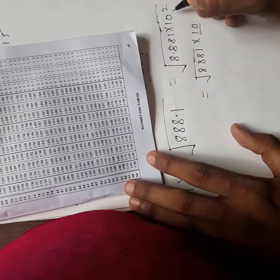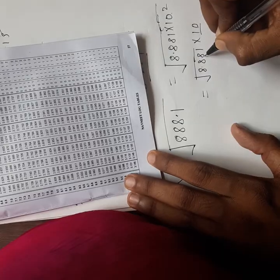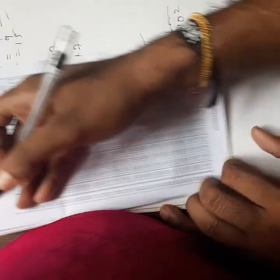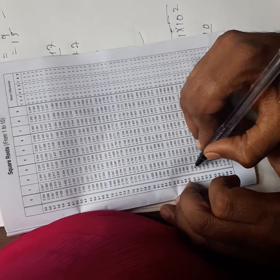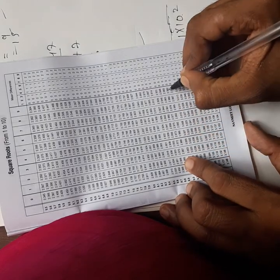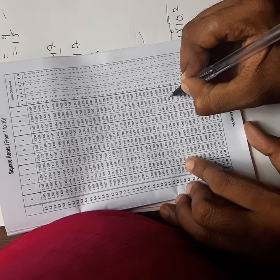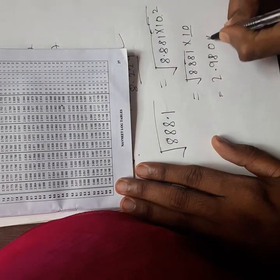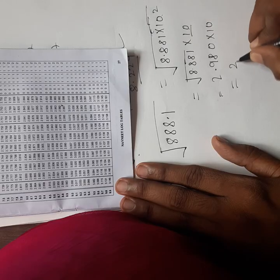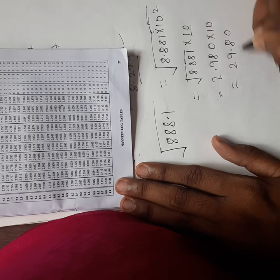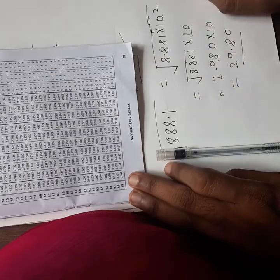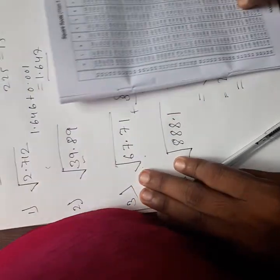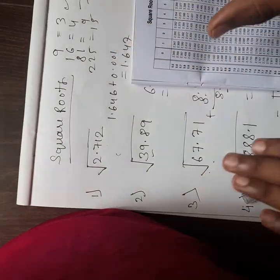I hope you're understanding what I did here. I took out square root of 100 as 10. For 8.881, I see here 8.88, row 88, column 8, and for 1 it's 0. So 2.980. I can directly write here 2.980 times 10, which is 29.80.